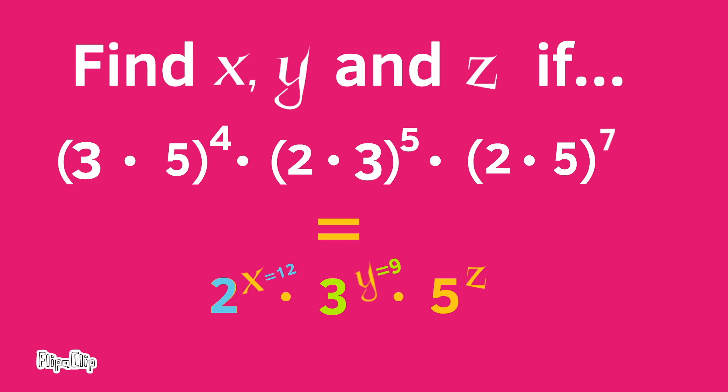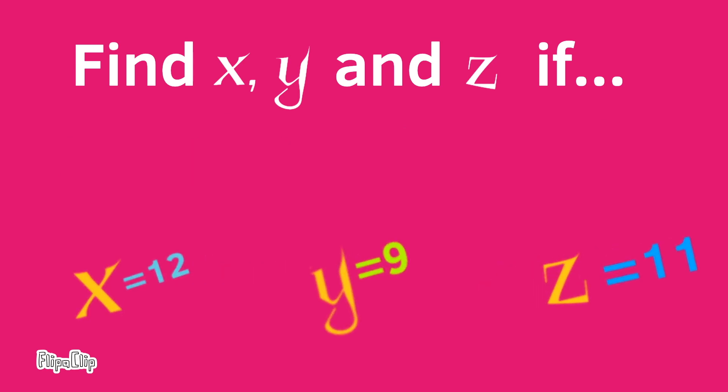I can see that there are two base number 5s. The first base number 5 has an exponent of 4, and the second base number 5 has an exponent of 7. And 4 plus 7 equals 11, or 5^4 × 5^7 = 5^11. x equals 12, y equals 9, and z equals 11.